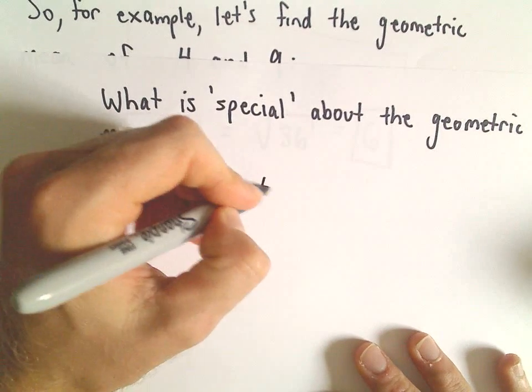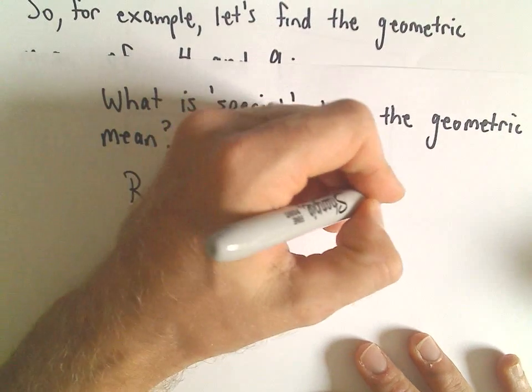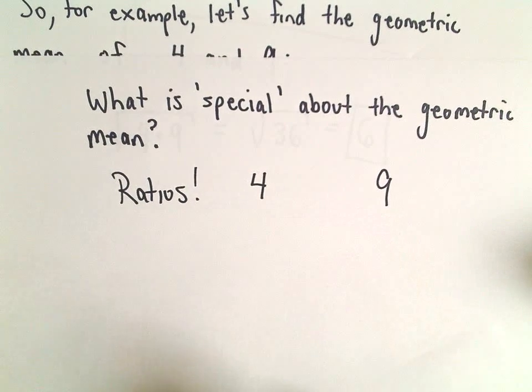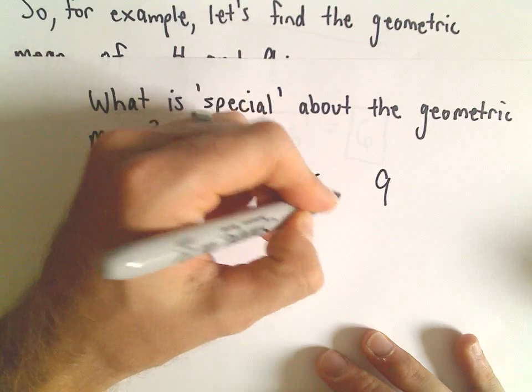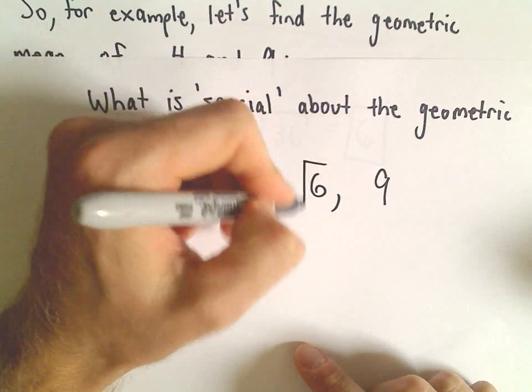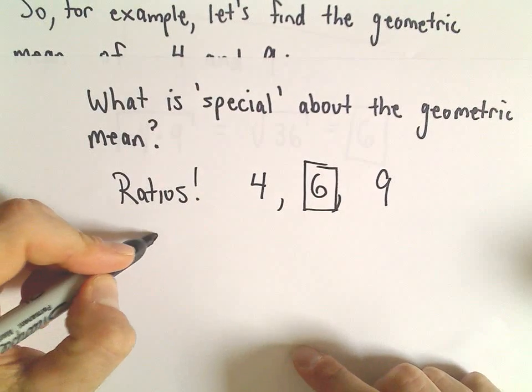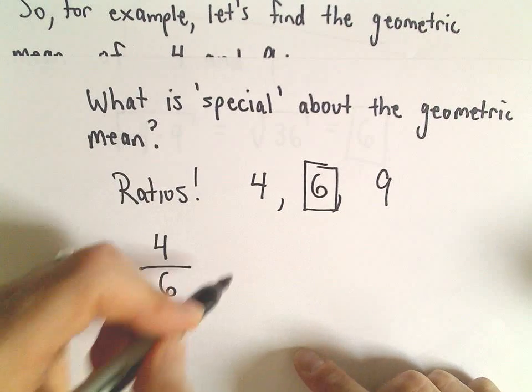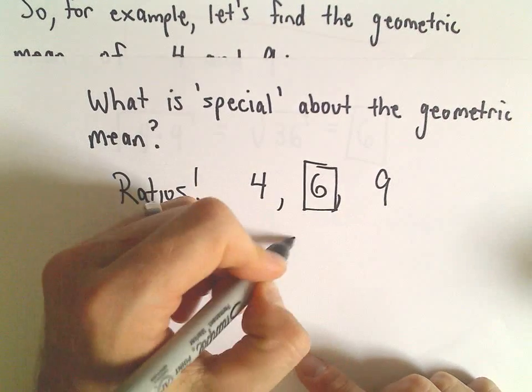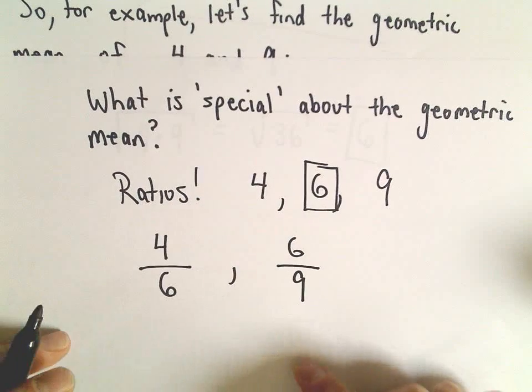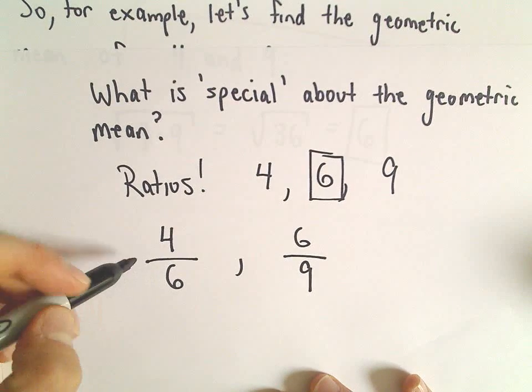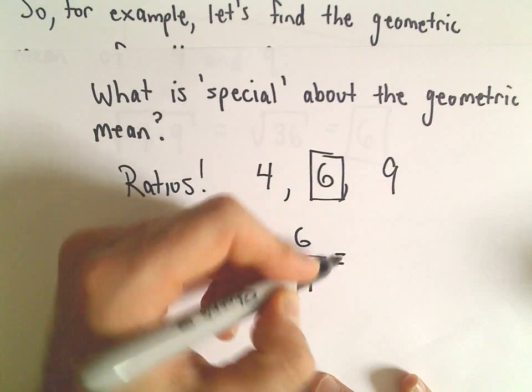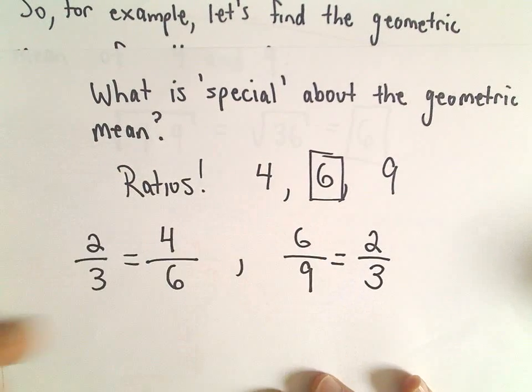We started with 4 and 9, the numbers we were finding the geometric mean of, and we found that geometric mean to equal 6. Notice if we look at the ratio 4 divided by 6, and then the ratio 6 divided by 9, well, 4 over 6 reduces to 2/3. And 6 over 9 also reduces to 2/3.